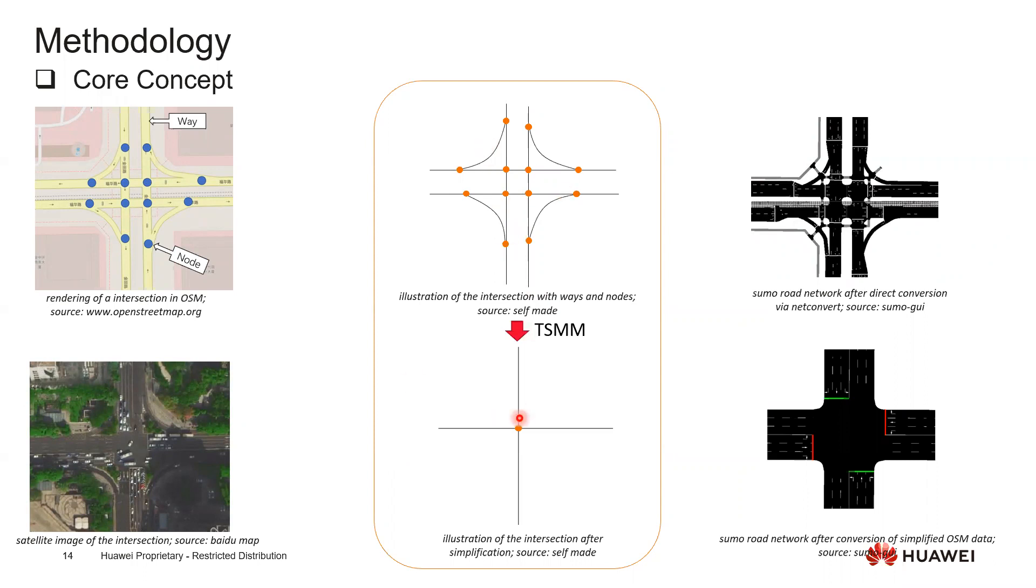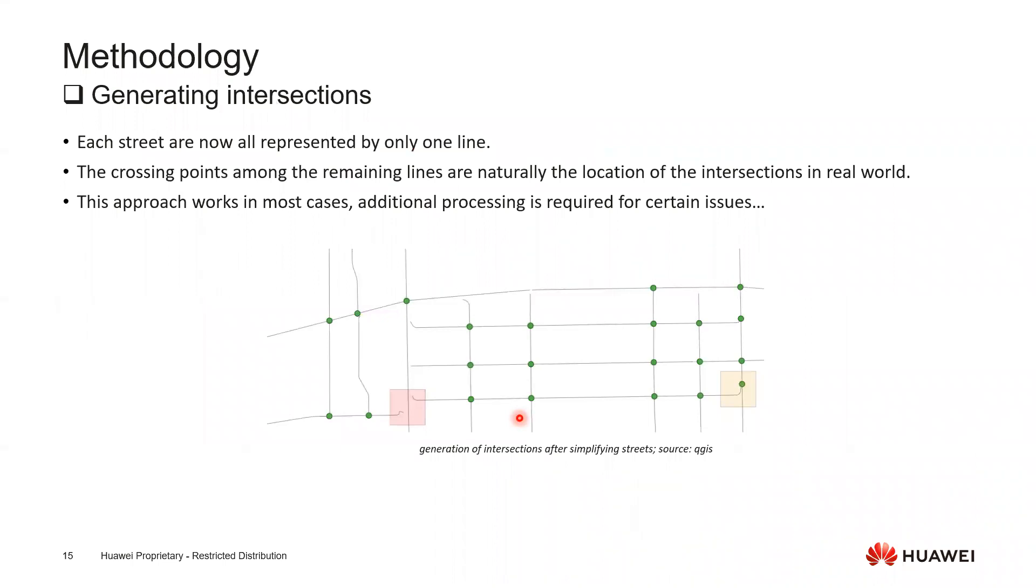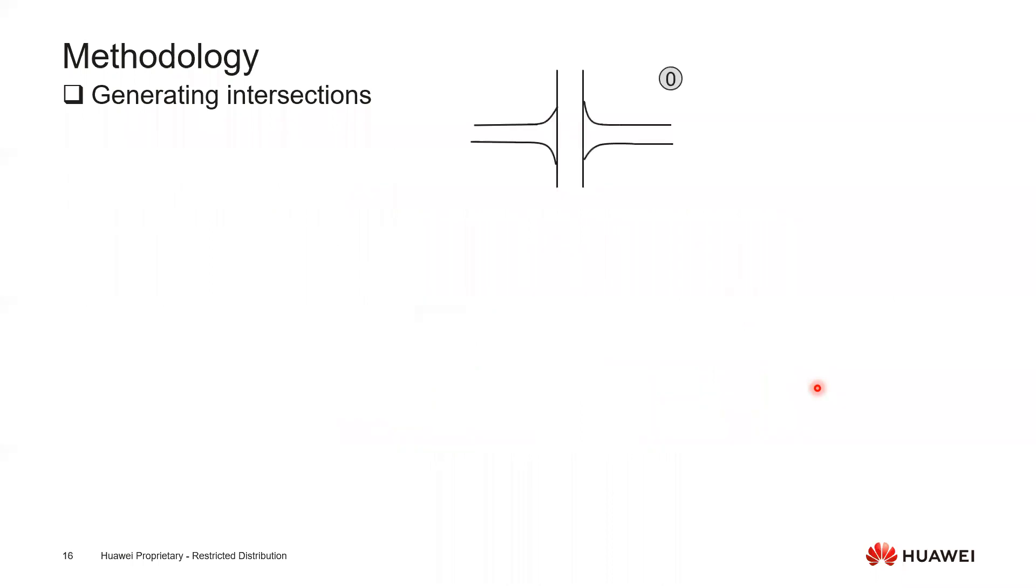After simplifying the streets, next what we need to do is basically generate the intersections. Apparently if two lines have a crossing point, then we will take the crossing point as a location for the intersections. This works in most of the cases as you see this green spot, but still some additional processing is required. Like here there are disconnections and here there are very sharp curves - this is what we do not want to see in the final Zumo road network. To solve that, I want to show why there is such a problem. If this is original OpenStreetMap data, after the simplification of all the roads, this is the result we have - this is exactly the sharp curve and this is a disconnection.